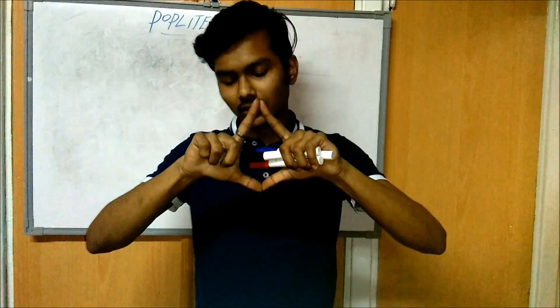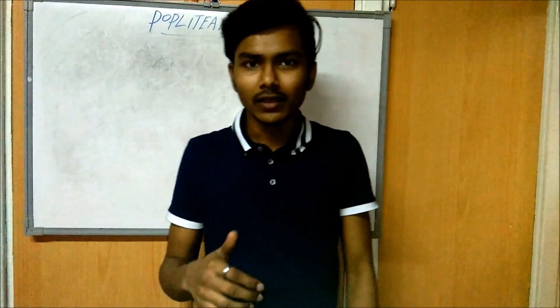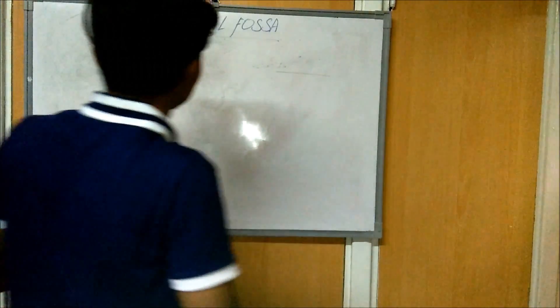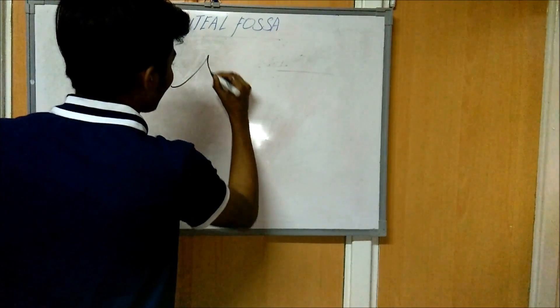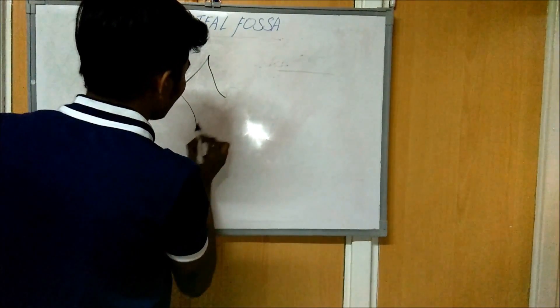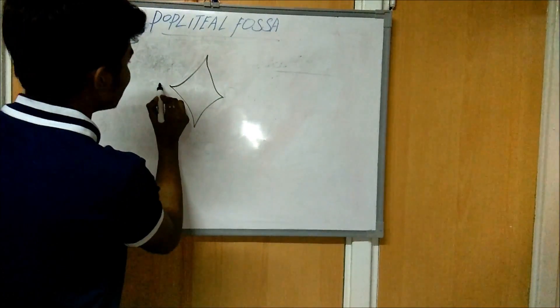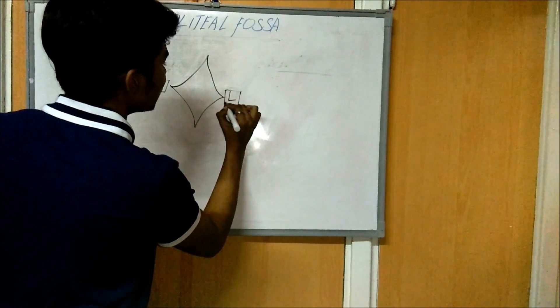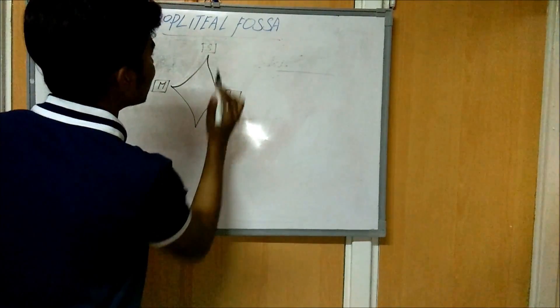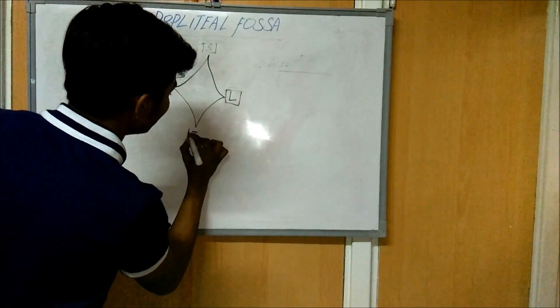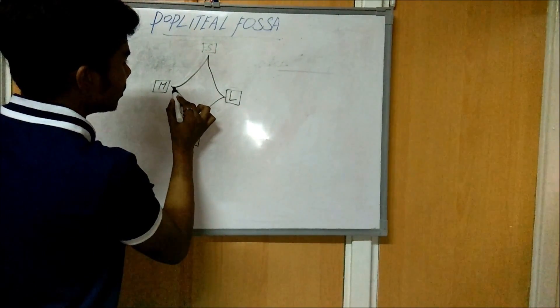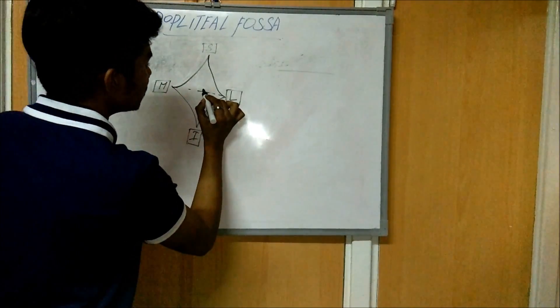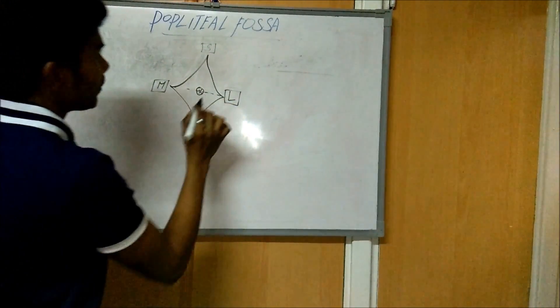The popliteal fossa looks like a diamond shape, and it is located behind, or at the posterior part of, the knee joint. It has a medial border, a lateral border, a superior border, and an inferior border. Between the lateral and medial borders there is a depression — this is the popliteal fossa.